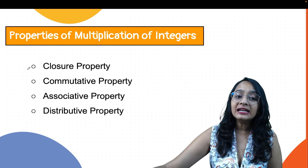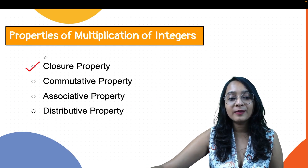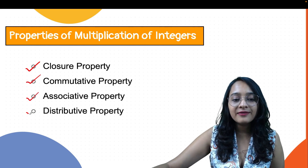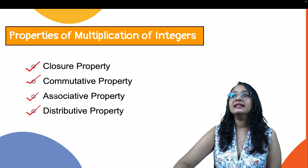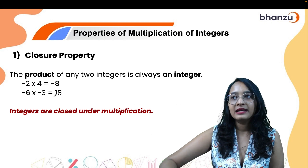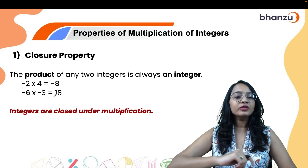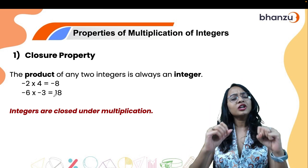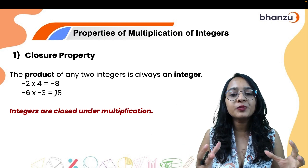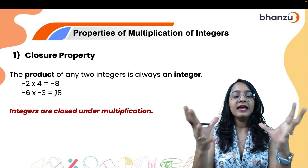Now let us jump into the second most important topic of this video: properties of multiplication of integers. Under this we will be talking about closure, commutative, associative, and distributive property. Starting with the first one — closure property.